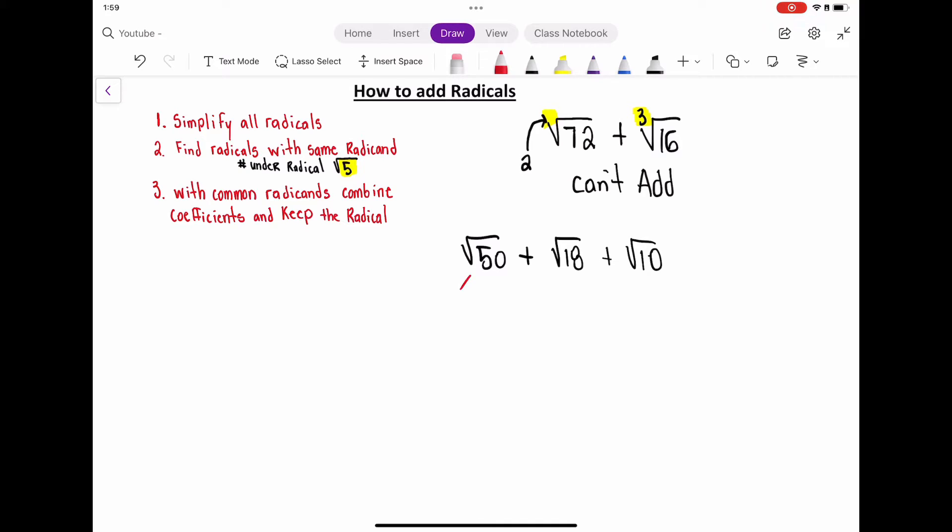So when I look at 50, I think we could use 25 and 2. Radical 25 times radical 2 will give us radical 50. And once we look at this, we know that 25 is a perfect square. So once we simplify, we'll get 5 radical 2.